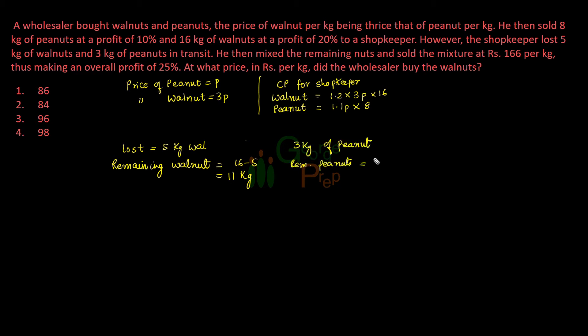He then mixed the remaining nuts, so remaining nuts that he has is 11 plus 5, that is 16 kg. So he mixed these two and sold the mixture at Rs. 166 per kg. So if I want to find out total SP for shopkeeper, that will be 166 times 16, because this is per kg and he has 16 kg of the mixture. And he made overall profit of 25%.